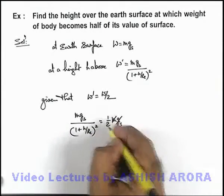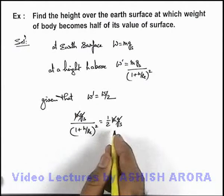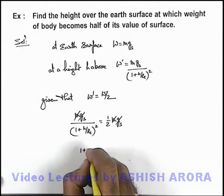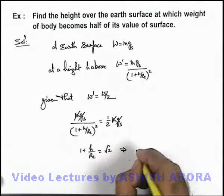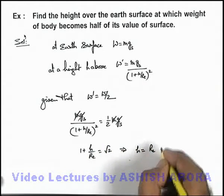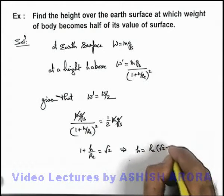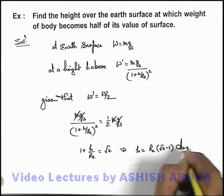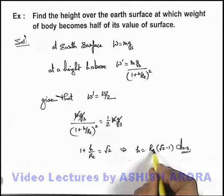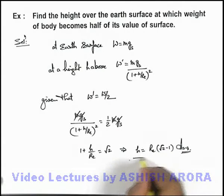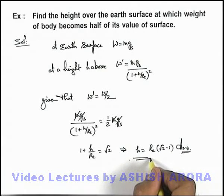Here we can see mg_s gets cancelled out, and on simplifying we get (1 + h/R_e) = √2. This implies the value of h will be R_e(√2 − 1). That means if a body is kept at (√2 − 1) times the radius of the Earth above the surface, its weight will be half of that which exists over the surface of the Earth.